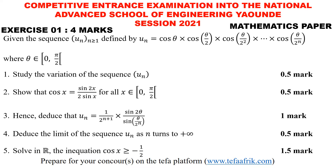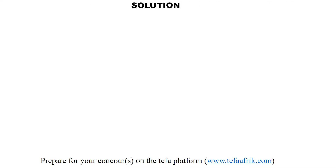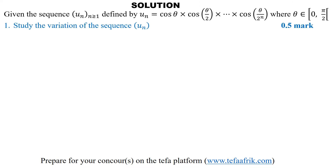So let's dive directly to the solution of these problems. Solution, equation 1: study the variation of the sequence UN. The variation of the sequence simply means we need to say if the sequence is increasing or decreasing, strictly increasing, or strictly decreasing.